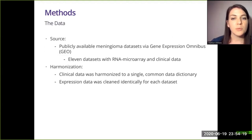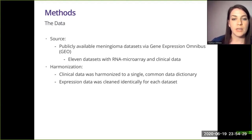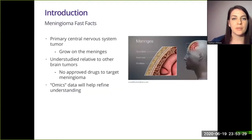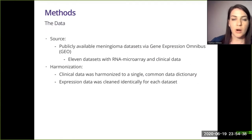There are multiple repositories which hold publicly available omics data, but for the purposes of this initial Meningiomics build, we focused on the data available in the Gene Expression Omnibus. We selected 11 datasets with RNA microarray and clinical data. These datasets were harmonized to allow for collective analysis. Clinical data were harmonized to a single common data dictionary, and expression data were lightly cleaned identically for each dataset.